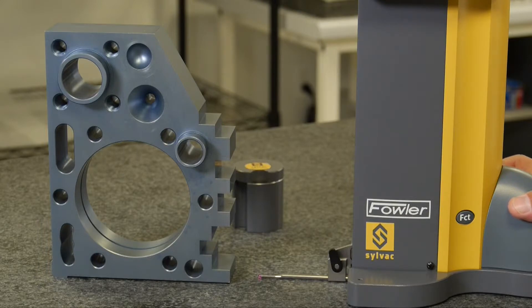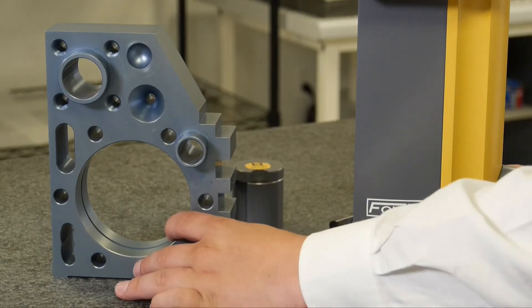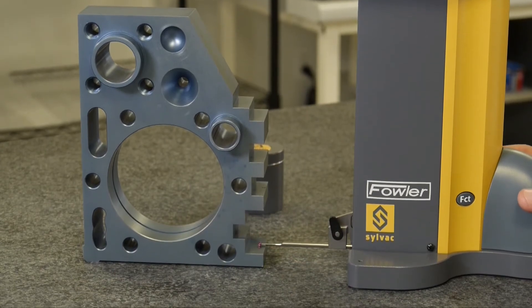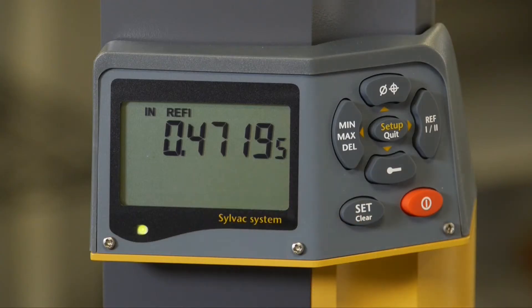From there, we can take the probe and drive it up and land on a surface to take a basic height measurement, 471 thousandths.